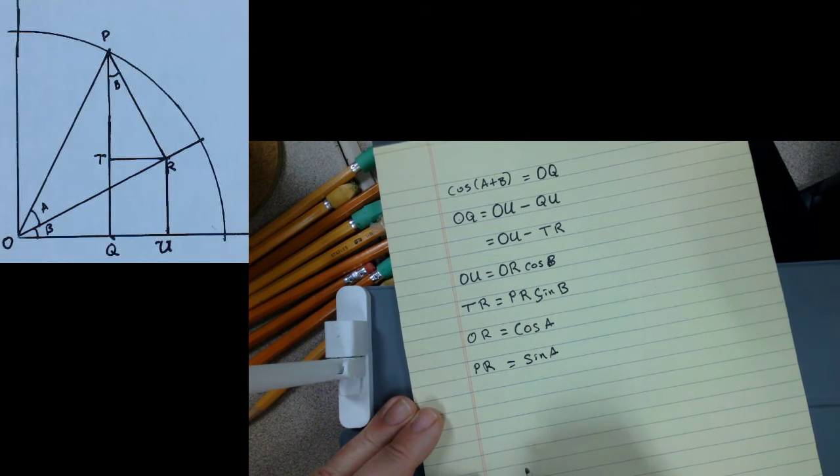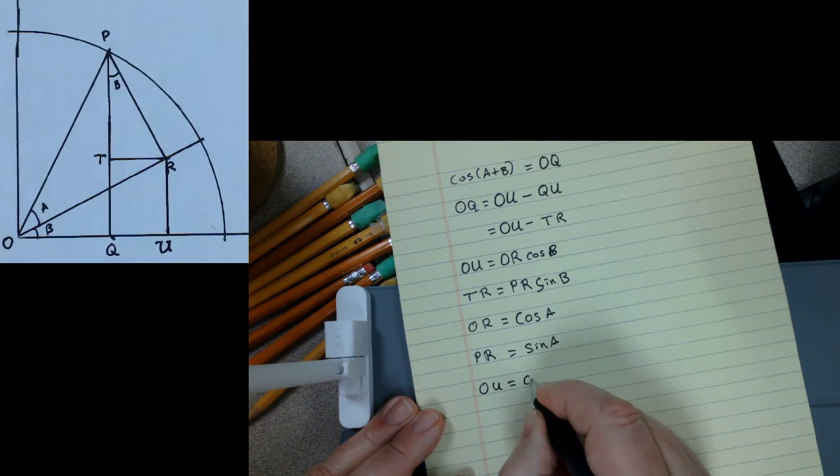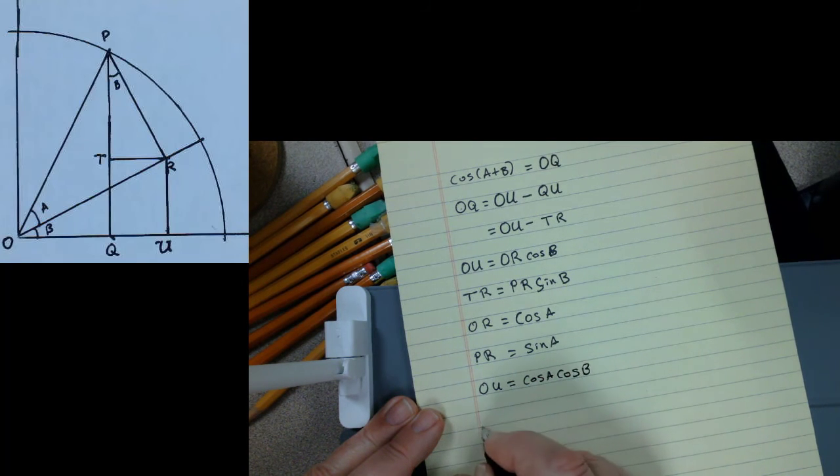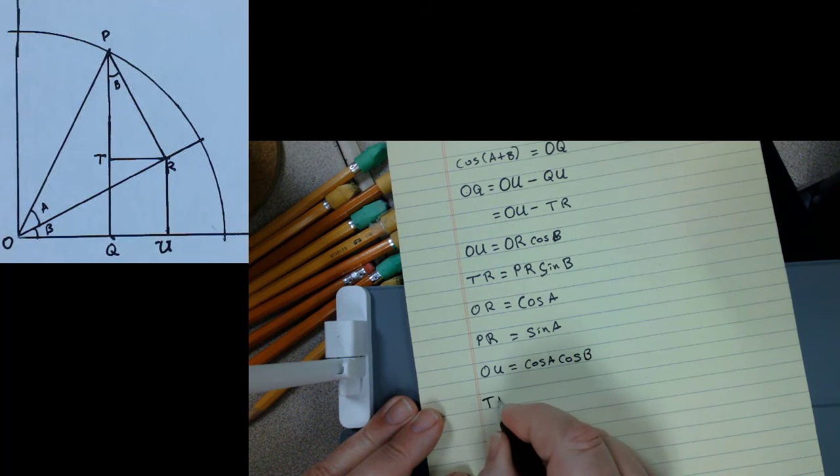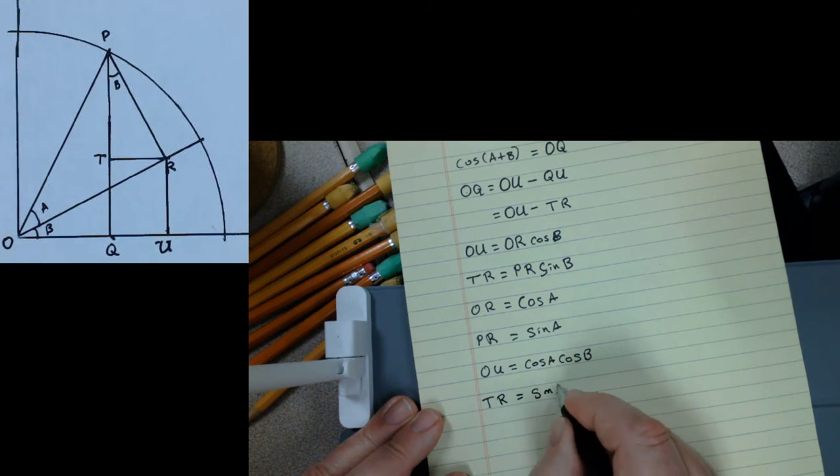And so I can piece together that OU is equal to cosine of A times cosine of B, and that TR is equal to sine of A times sine of B.